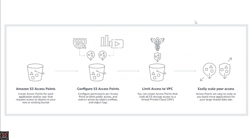We have to create an access point for each application and user that requires access to our objects stored in the existing bucket. So if we have a bucket with many objects, for every different user you need to create a different access point so they can easily access the objects in our bucket.